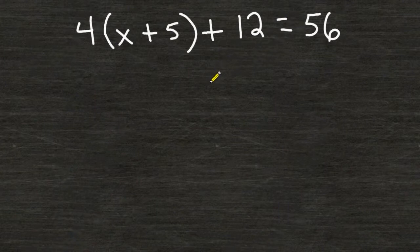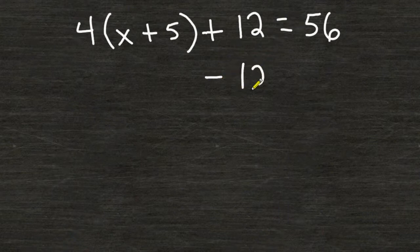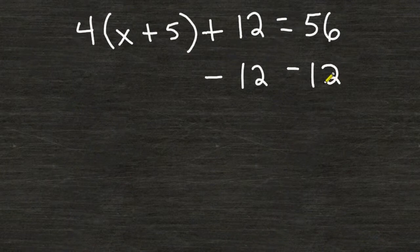The first thing that we can do in this equation is get rid of this plus 12 and send it to the other side of our equation. To get rid of something that you are adding, you do the opposite of that, which is to subtract that number, but you must do it to both sides of your equation in order to balance your equation.